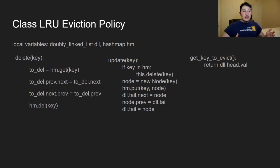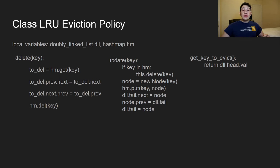The final operation is getting a key to evict when the cache is at capacity. All we do is return the key at the head of the doubly linked list — that's the least recently used element. Just get the value of that head node and return it.